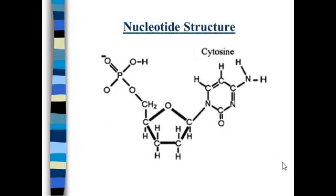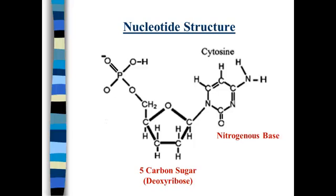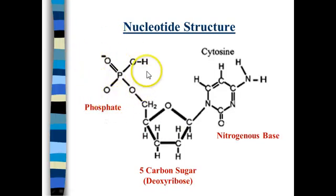The structure of a nucleotide — this is cytosine, which is the letter C — looks like this, and there are three parts. The nitrogenous base is where our A's, C's, T's, G, and U come from. It's a nitrogen-containing base, meaning it's the opposite of an acid. The second part is a five-carbon sugar, and this five-carbon sugar is deoxyribose. The third part of nucleotides is a phosphate.